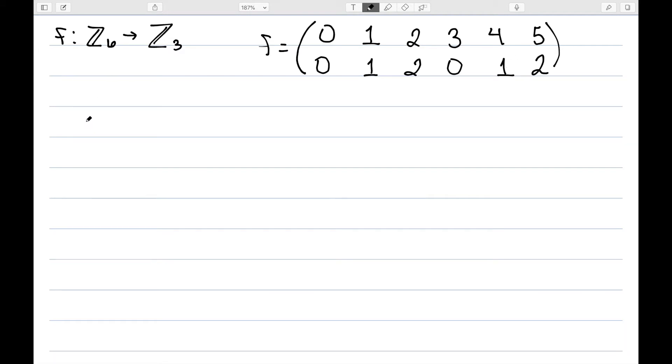We can see pretty easily that this is a surjective homomorphism. And we can also see the kernel of F. The things that map to the identity is going to consist of 0 and 3. This is equivalently the subgroup generated by 3 in Z6.